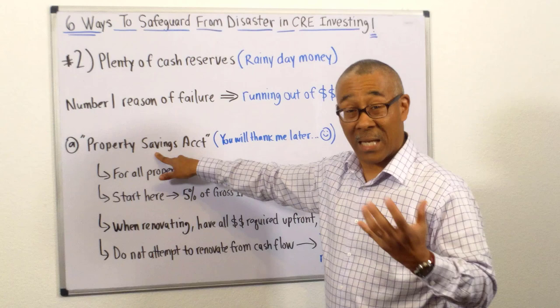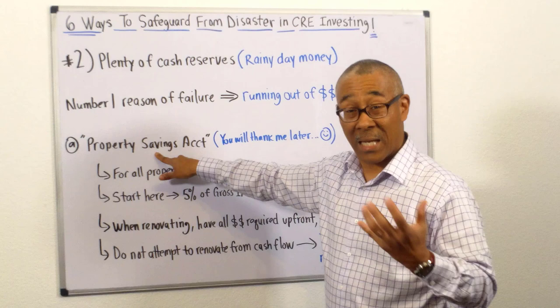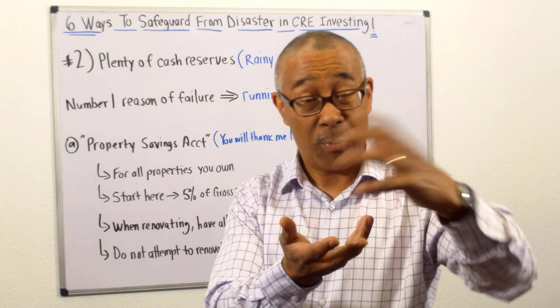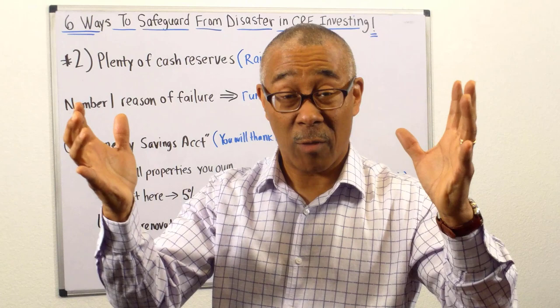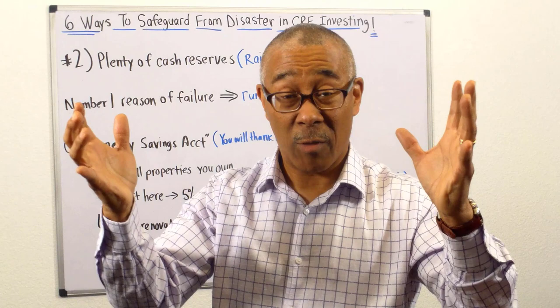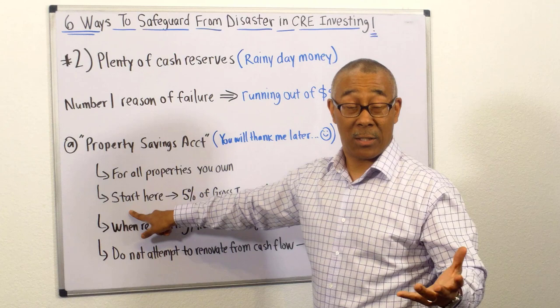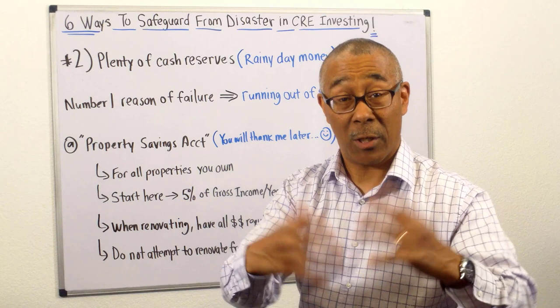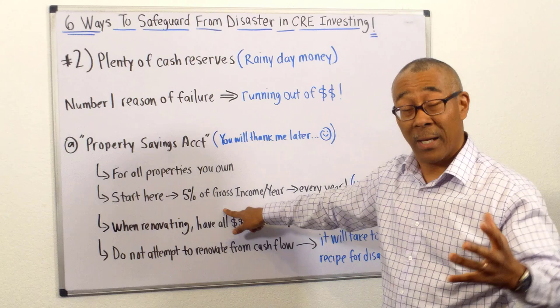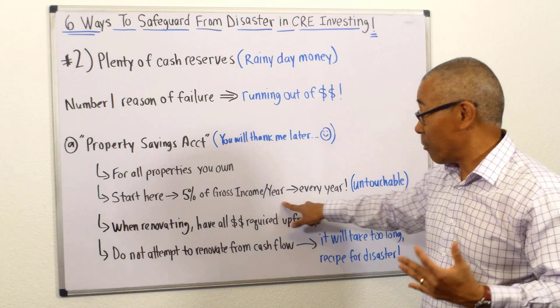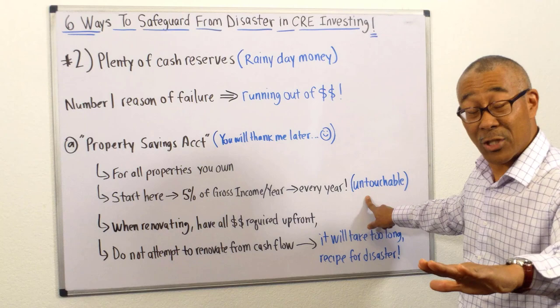A cash reserve fund — also called a property savings account — should apply to every single property you have. Every property should have a property savings account, and you will thank me later, guaranteed. You're going to start off by saving 5% of your gross income per year and putting it into that account. It's not a lot of money, but it's continual and will build up. And it's untouchable — you don't touch it until stuff happens, until you have that rainy day.